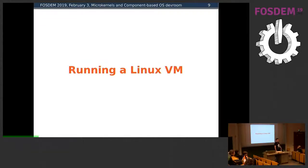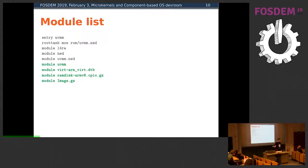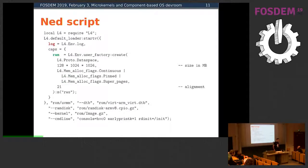Now we will make a jump to something much more complex, such as running a Linux VM on top of L4E. This time our modules list will remove the Hello binary and add some new binaries: the UVMM binary, which is the user space virtual machine monitor used in L4E systems, the UVMM net script, a binary device tree used by the Linux guest, a RAM disk, and a Linux kernel image. The NetScript used this time is also much more complicated than the Hello World example.